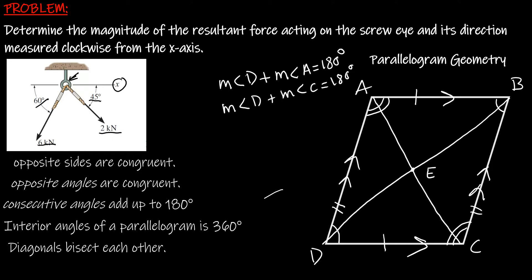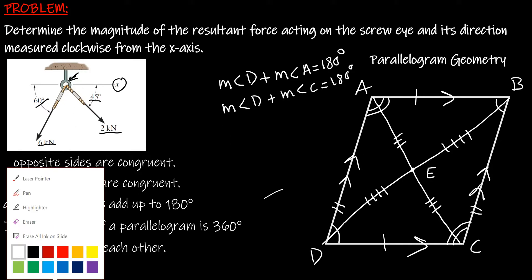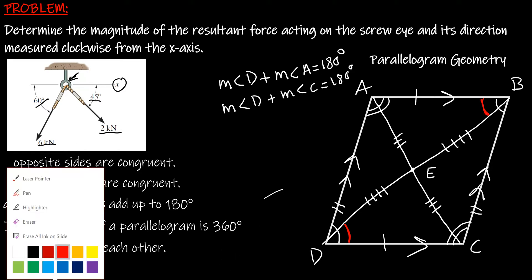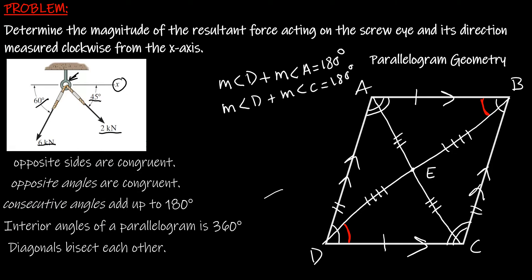The diagonals of a parallelogram intersect at point E, so AE has the same length as EC and DE has the same length as EB. Additionally, alternate angles are equal to each other. These are the properties of a parallelogram.